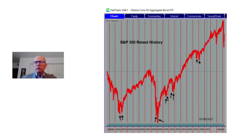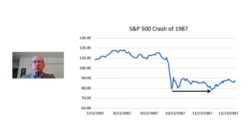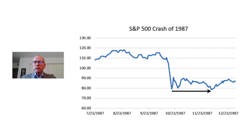We should not be surprised to see a retest of the March low of this year, which could come six to twelve weeks out into the future. In 1987, where we saw another 30-plus percent decline off of the August highs, the decline on October the 19th is what we all refer to as the crash of 1987 — but the actual closing low was on the retest on December the 4th of 1987.